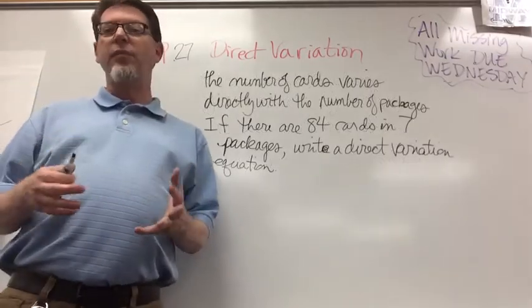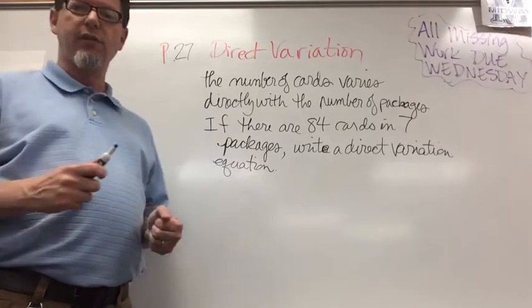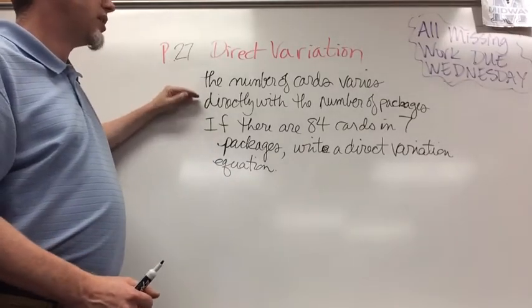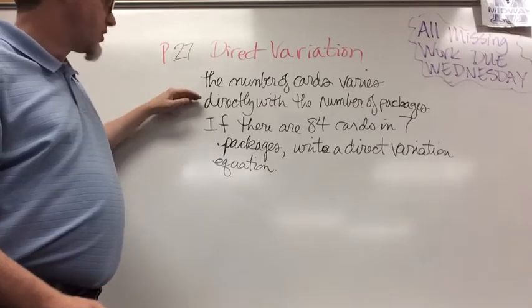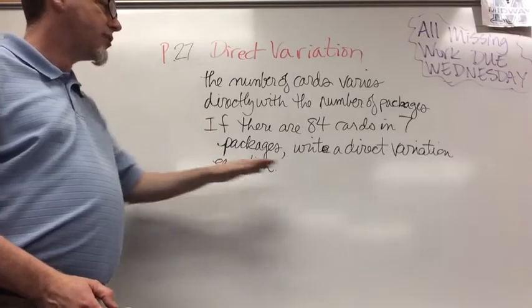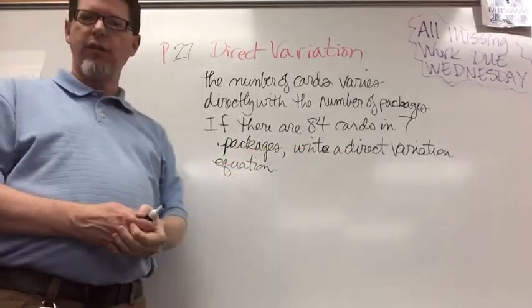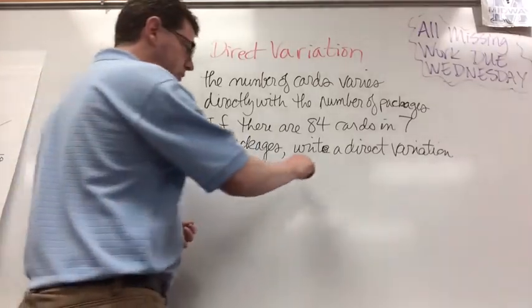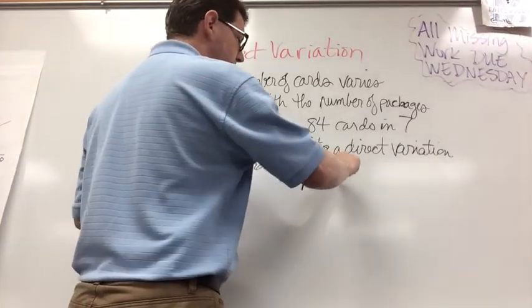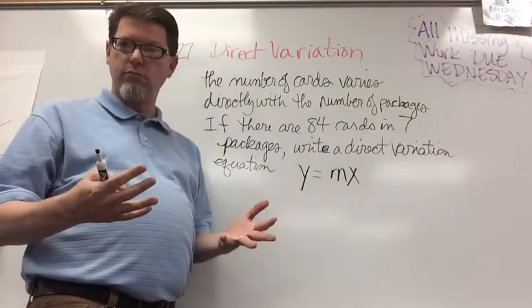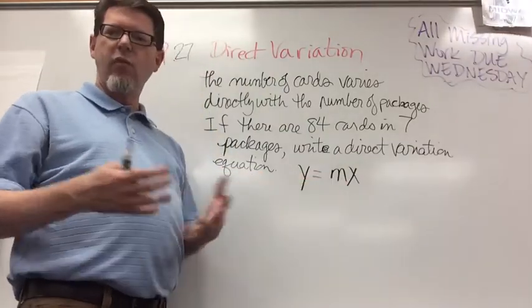So let's look at an example now of how to use the direct variation equation. The number of cards varies directly with the number of packages. So let's say if there are 84 cards in 7 packages, I need to write a direct variation equation. Well remember that a direct variation equation is always in the form of y equals m times x, where y and x don't change. So I've got to find out m. What is my slope?